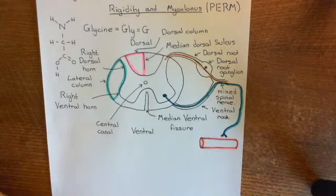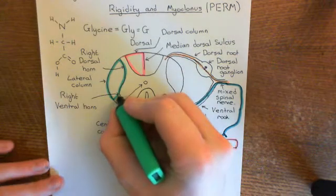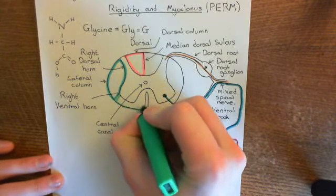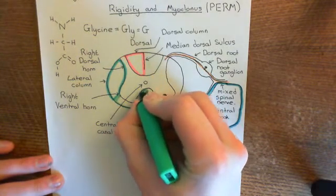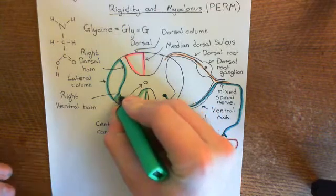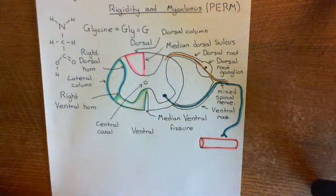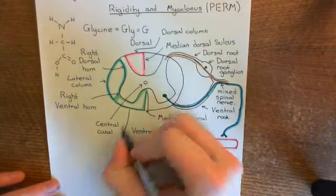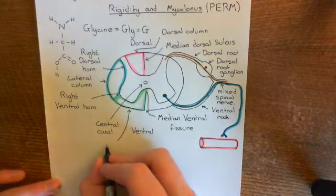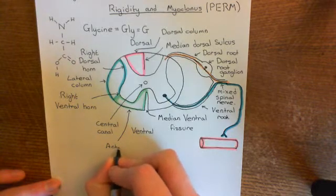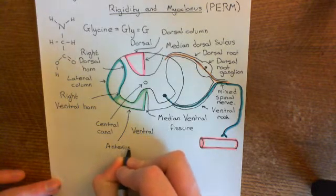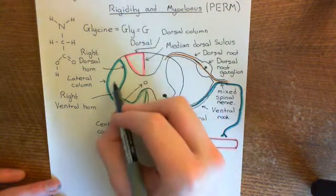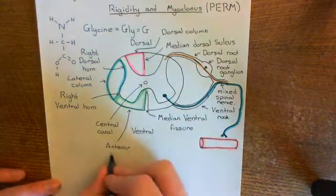In green, finally, we'll have the anterior column. All of this is the anterior white matter column here. This carries a mixture of fibres going up to the brain and fibres going down from the brain to the spinal cord. So you have these three pairs of columns — the right dorsal column, the right lateral column, and the right anterior column.